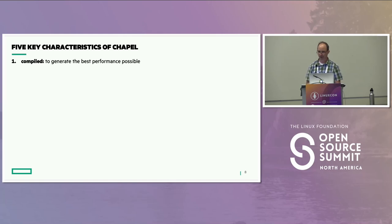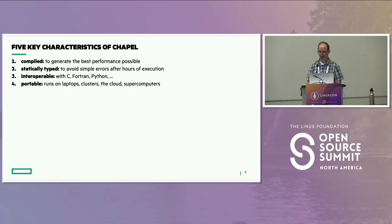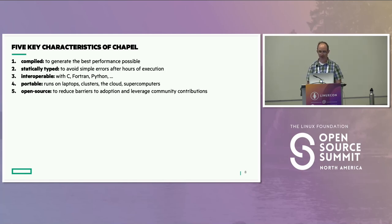Before I get into details, here are five key characteristics of Chapel. First, it's a compiled language — you invoke a compiler, it's not interpreted — this is part of our approach to getting the best performance. It's statically typed to avoid simple type errors after hours of execution. It's interoperable with C, Fortran, and Python. It's portable — running on laptops, clusters, the cloud, and supercomputers. And it's open source, to reduce barriers to adoption and leverage community contributions.